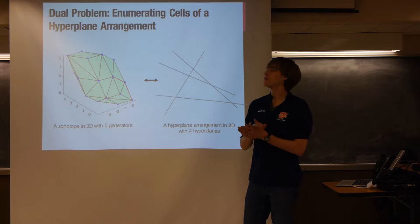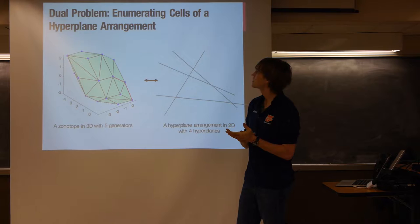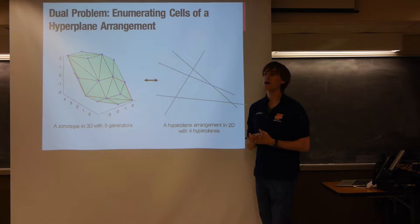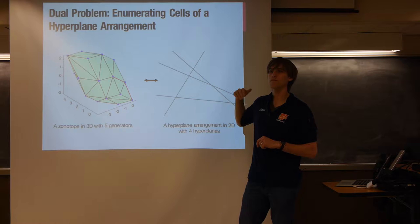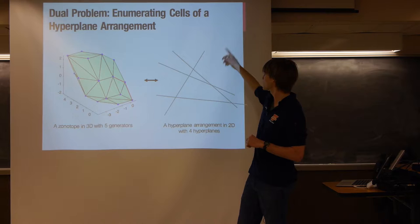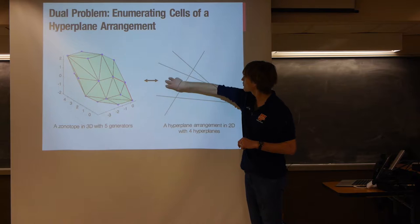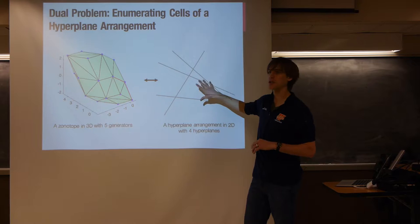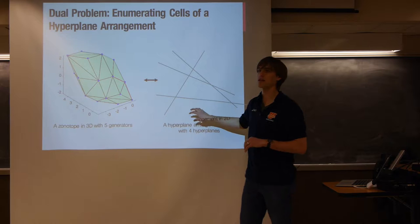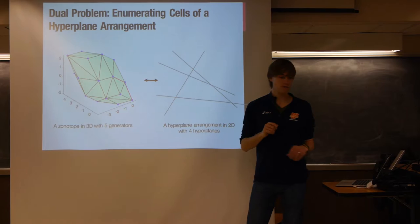This polynomial vertex count is why the zonotope helps with problems that are generally NP-hard: you map the high-dimensional input into a structure where the important points are just the polynomially many vertices. A key duality: zonotope vertex enumeration was first studied via its dual problem, hyperplane arrangements. The cells of a hyperplane arrangement correspond one-to-one with the vertices of the zonotope — so enumerating cells in a hyperplane arrangement is combinatorially the same as enumerating zonotope vertices.